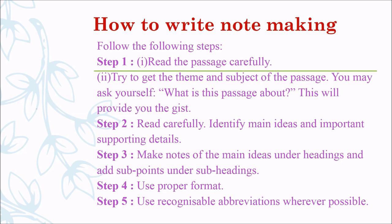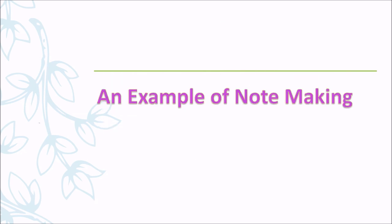To write notemaking, follow these steps. Step 1: Read the passage carefully, then try to get the theme and subject — ask yourself, 'What is this passage about?' This will provide you the gist. Step 2: Read carefully and identify main ideas and important supporting details. Step 3: Make notes of the main ideas under headings and add subpoints under subheadings. Step 4: Use proper format. Step 5: Use recognizable abbreviations wherever possible.